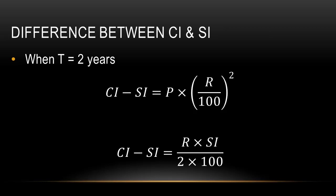The next shortcut is when questions are based on the difference between compound interest and simple interest. The first case is when the time period given is 2 years. The difference between CI and SI is given by P × (r/100)². The second formula is CI − SI = r × SI / (2 × 100). The first formula is used when we are given the principal, and the second when we are given the simple interest.